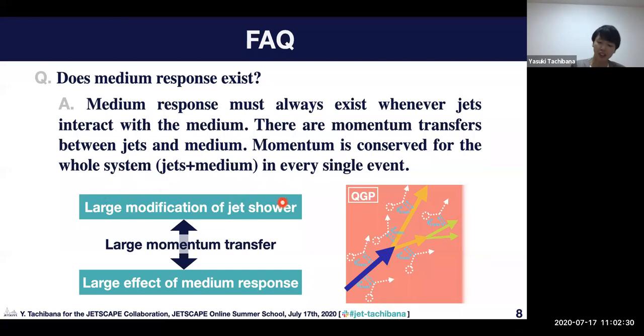If you have large modification of jet shower, it means you have large effects from momentum transfer, which means you may have large effects of medium response. So just ignoring medium response is not good, and this problem is related to the next question.